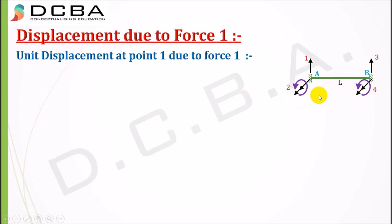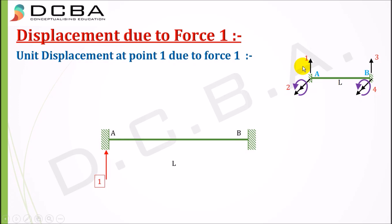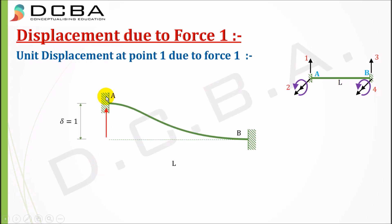Now let's construct the beam element matrix. The first step is displacement due to force one. Force one acts at point one and we check the displacement of the beam due to this force. As discussed in the previous video, the beam deflects and the magnitude required to produce a unit displacement delta equal to one is 12EI/L³. This force causes a unit displacement at point one.